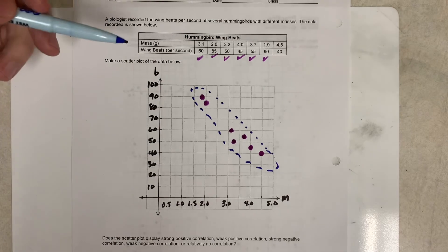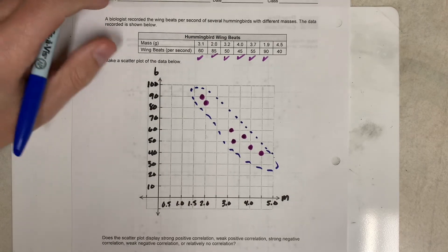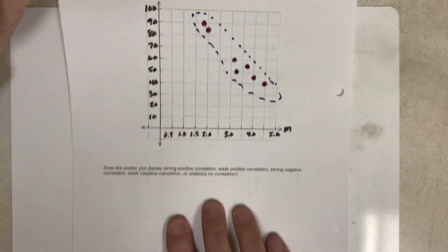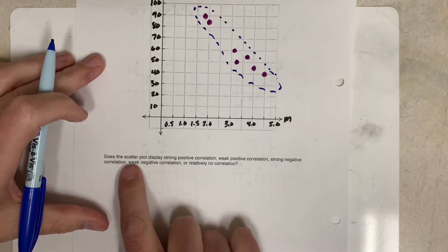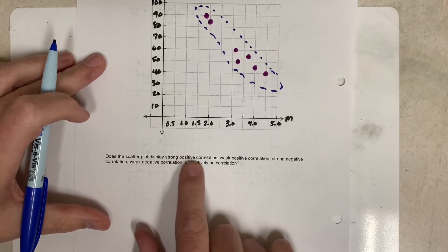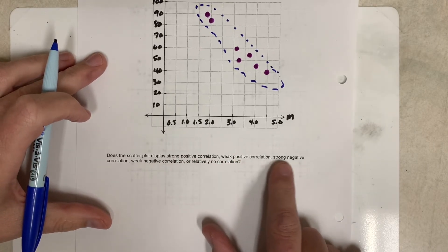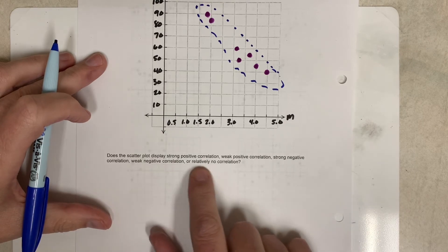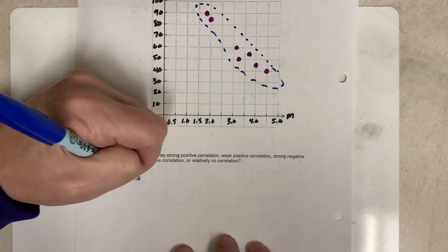So it says on the bottom, does the scatter plot display strong positive correlation, weak positive correlation, strong negative, weak negative, or relatively no correlation? So my answer would be strong negative.